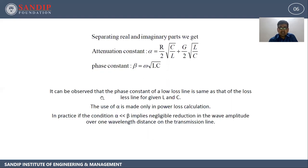It can be observed that the phase constant of a low loss line is the same as that of a lossless line for a given L and C. The use of alpha is made only in power loss calculation. In practice, if the condition alpha is very much less than beta, it implies a negligible reduction in the wave amplitude over one wavelength distance on the transmission line.